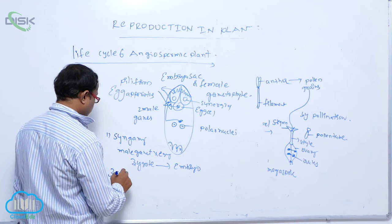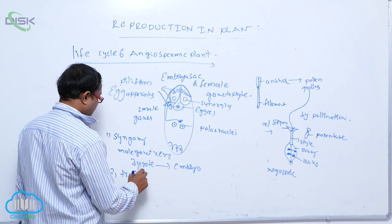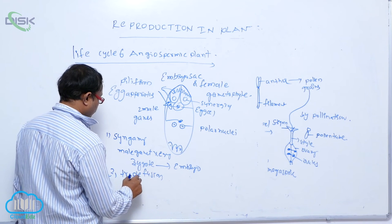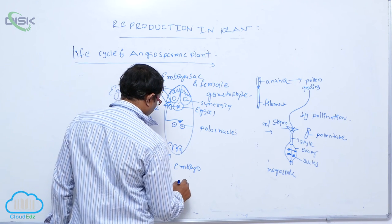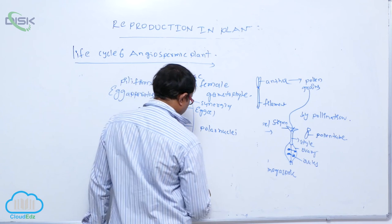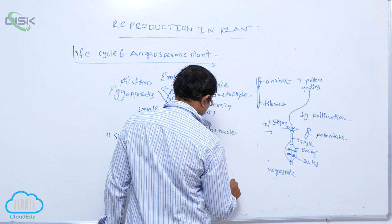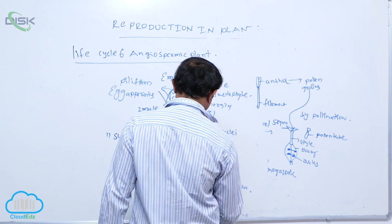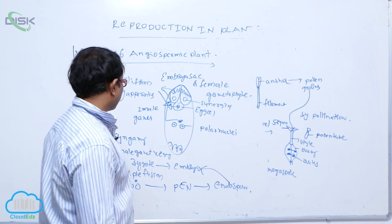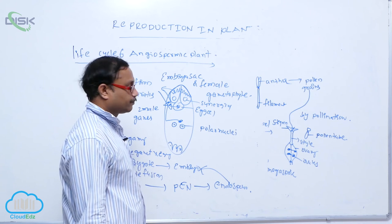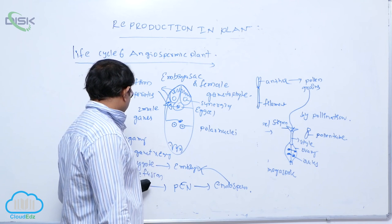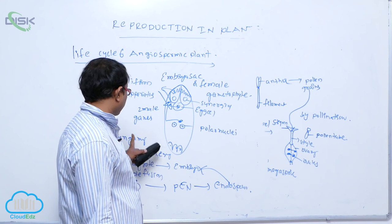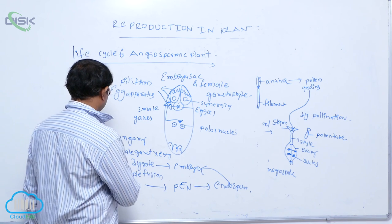The second process is triple fusion, where two polar nuclei and one male gamete combine to produce the primary endosperm nucleus. This primary endosperm nucleus then produces the endosperm, which provides food material for the development of the embryo. Since both syngamy and triple fusion occur in angiosperms, this is known as double fertilization — the main important characteristic of angiosperms.